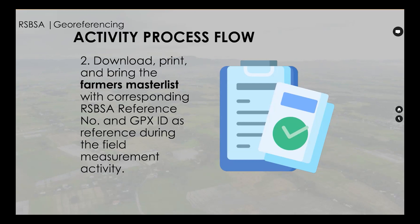Activity process flow number two: download, print, and bring the farmers' master list with corresponding RSBSA reference number and GPX ID, to be referenced during the field measurement activity.